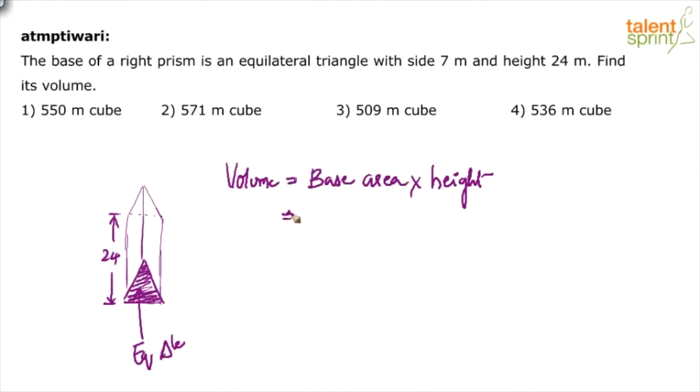What is base area? Since it is an equilateral triangle, you have to use the formula of area of a triangle. What is the area of a triangle? Root 3 by 4 a square into height is h.